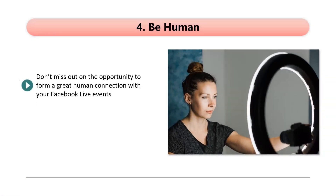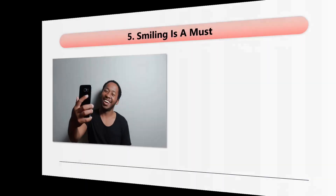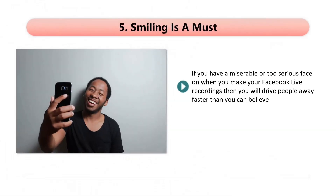Four: be human. Don't miss out on the opportunity to form a great human connection with your Facebook Live events. Tell your audience some interesting things about your life and keep the event on a personal level as much as you can. Make sure that any personal details you reveal are positive — nobody is going to want to listen to you complaining about how bad your life is. Five: smiling. If you have a miserable or too serious face, you will drive people away. Smile as much as possible on camera. Learn to speak with a smile — if your speech is unfriendly or monotone, people will become bored and leave.